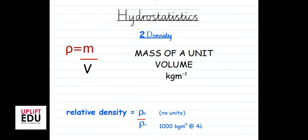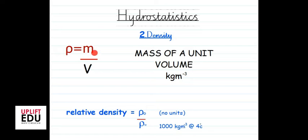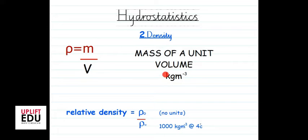The next topic is density. Density is the mass of a unit volume. If an object or liquid has a total mass M divided by its total volume V, the result is the density, denoted by rho (ρ). The standard international unit of density is kilograms per cubic meter (kg/m³), which represents the mass of a unit volume.